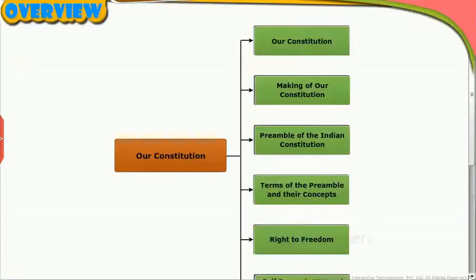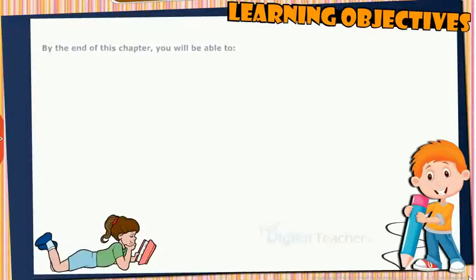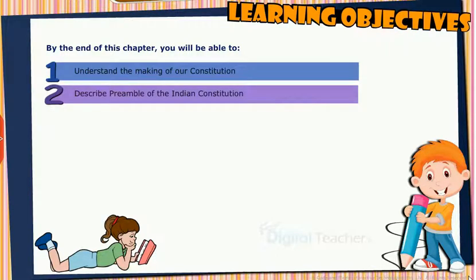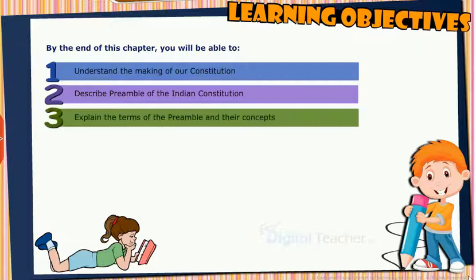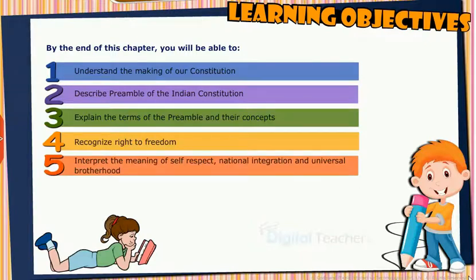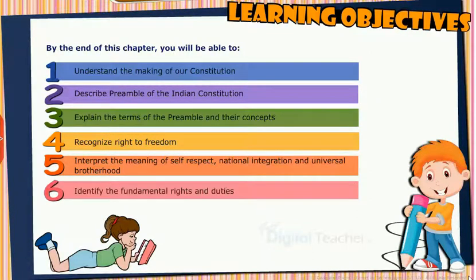This slide presents the overview of the chapter. Learning Objectives: By the end of this chapter, you will be able to understand the making of our constitution, describe the preamble of the Indian Constitution, explain the terms of the preamble and their concepts, recognize the right to freedom, interpret the meaning of self-respect, national integration and universal brotherhood, and identify the fundamental rights and duties.